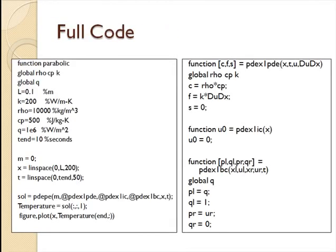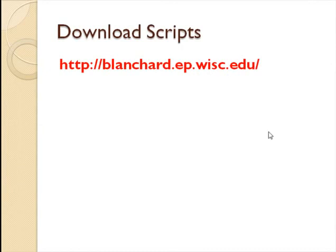And here just for completeness is all the code. If you look on the last slide, I give a link where you can download this code and you don't have to type it all in. But you see here I set up some constants. I set up the x and t spacing. I solve it and I do some plotting. And then here's the equation function, the initial conditions function, the boundary condition function. And if you want to download the code, just go to this URL and you should be able to get it. Thanks.